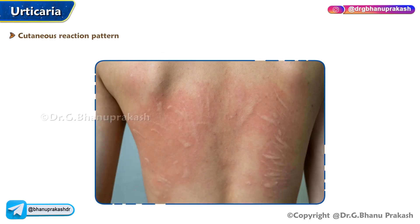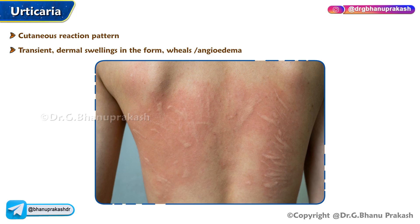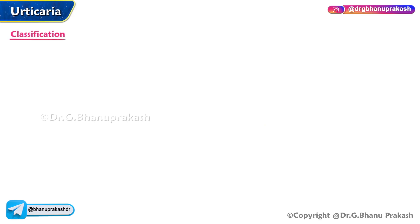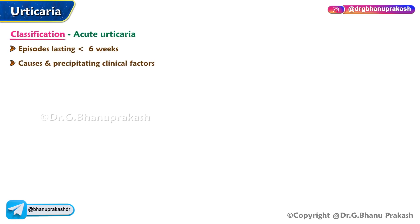Urticaria is a cutaneous reaction pattern consisting of transient dermal swellings in the form of wheals or angioedema. Classification of urticaria: acute urticaria is characterized by episodes lasting less than six weeks.